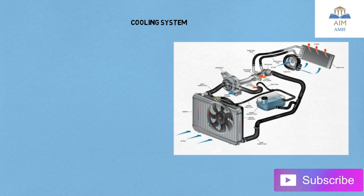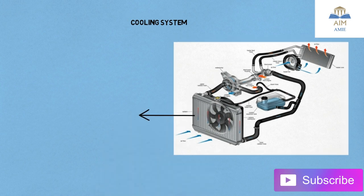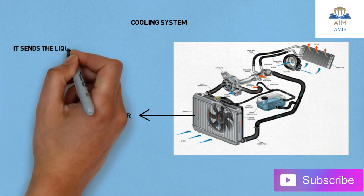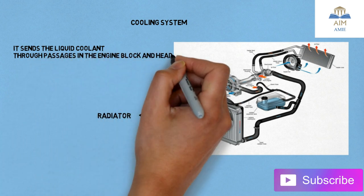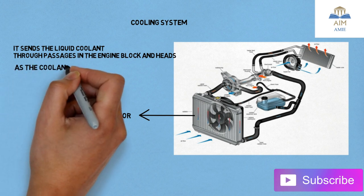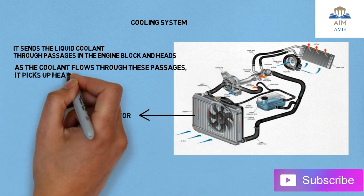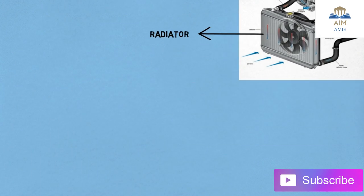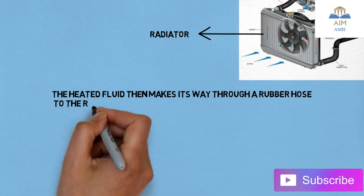In this image the cooling system is shown. The radiator has a fan over it. The radiator sends liquid coolant throughout the passages in the engine block and heads. As the coolant flows through those passages, it picks up heat from the engine block. The coolant itself gets heated, and then the heated fluid flows through a rubber hose to the radiator in front of the car. That was basically the systems in the automobile.